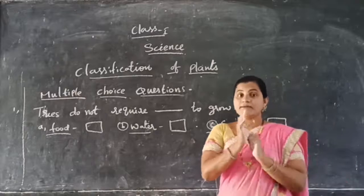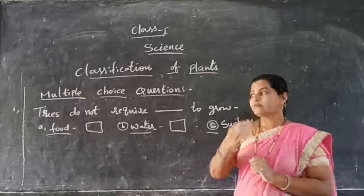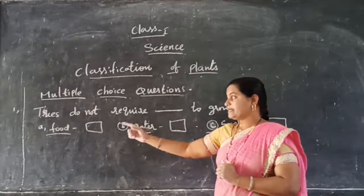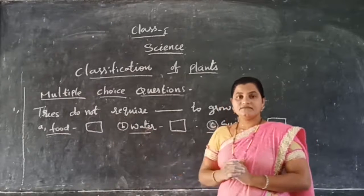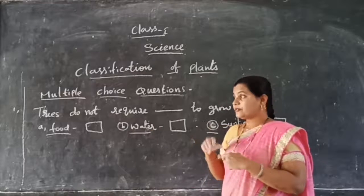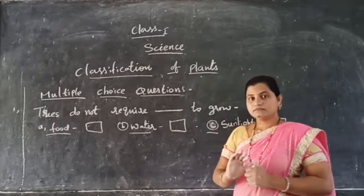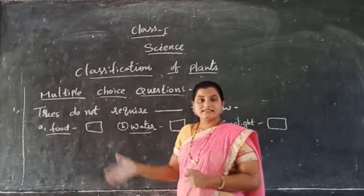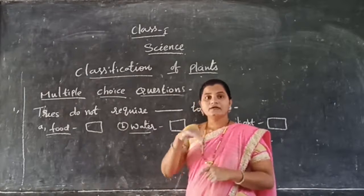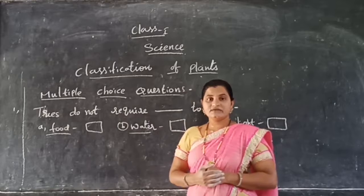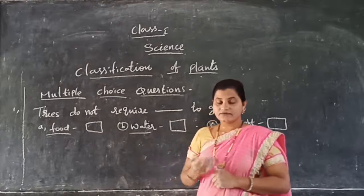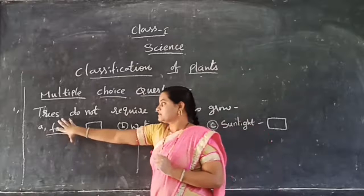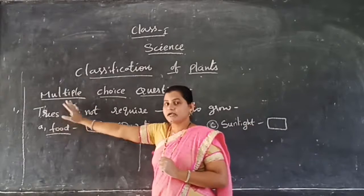Plants are capable to prepare their own food by themselves. Plants are capable to prepare their own food by themselves. So they need not collect food from the outside. Plants do not need to collect food from outside because they are capable to prepare their own food — known as autotrophs, which we will study in higher classes. So food is already available inside the plant.